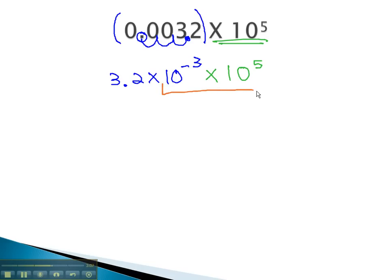We can combine our tens together by using that exponent property, where we add the exponents. This will give us 3.2 times 10 to the negative 3 plus 5, or second power.